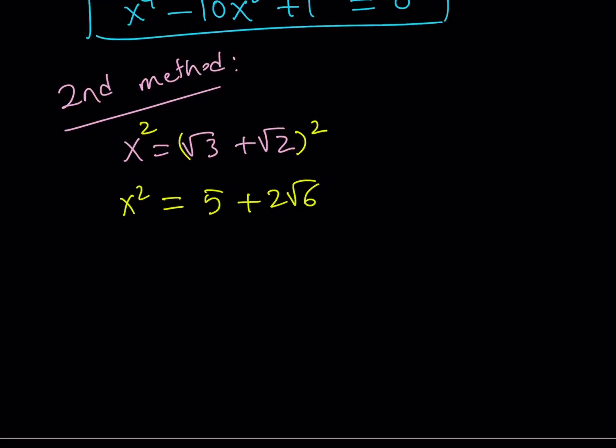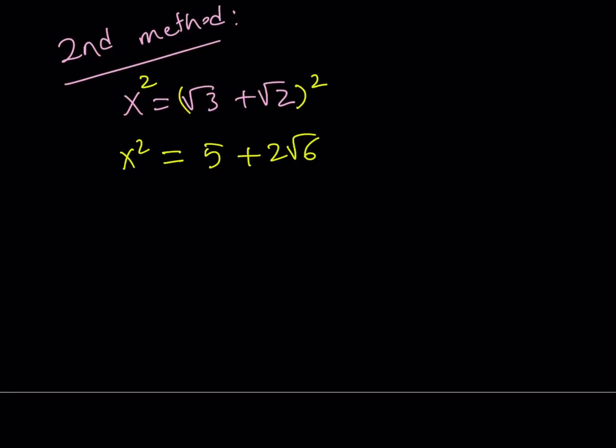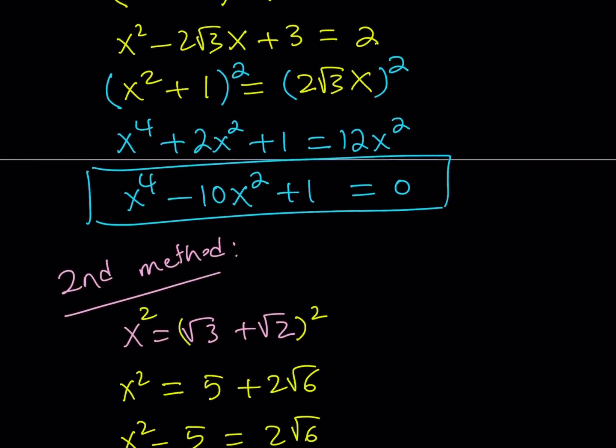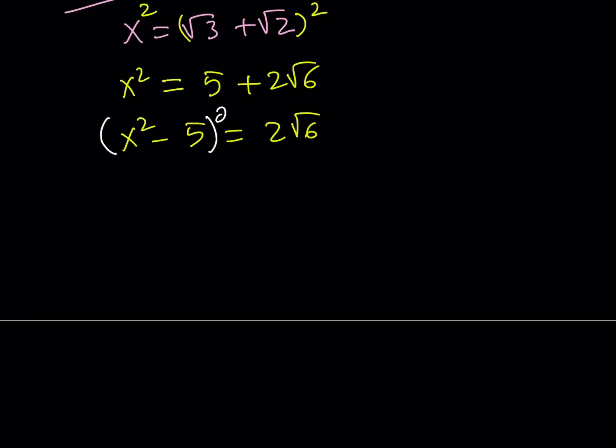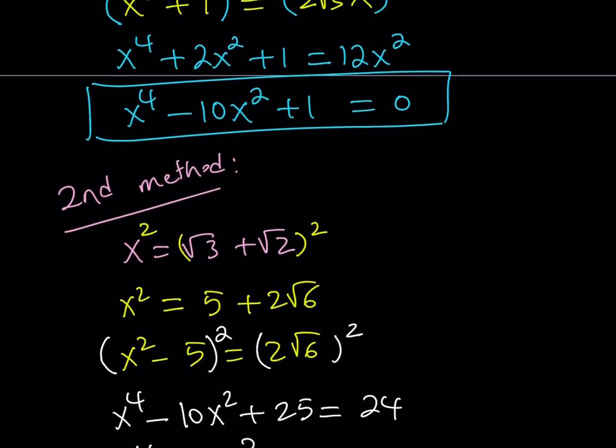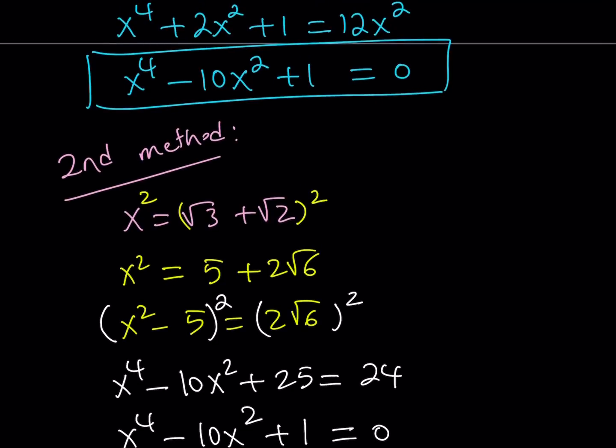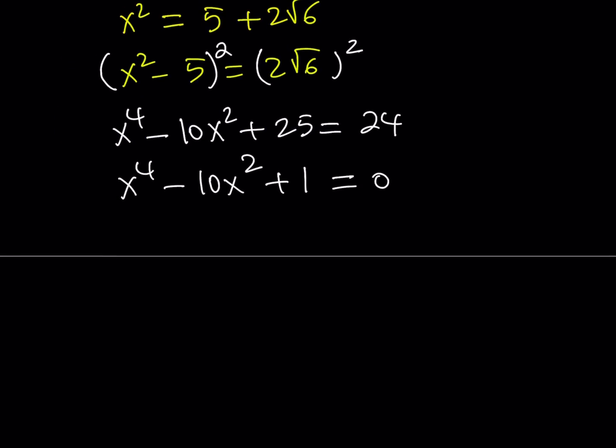Interesting. Don't worry, we'll revisit 5 plus 2 root 6. We're going to reverse the process later on. But let's go ahead and really get rid of the radical. Notice that these methods are different because I'm getting different things. Now we're going to square both sides. When you square both sides, you get x to the 4th minus 10x squared plus 25, and 4 times 6 is 24. If I bring the 24 over, I get x to the 4th minus 10x squared plus 1 equals 0. And that's exactly what I got with the first method. This is the second method, and we got the polynomial equation.